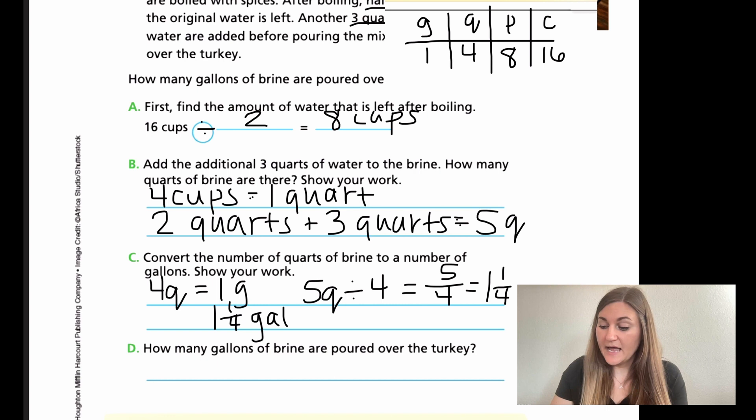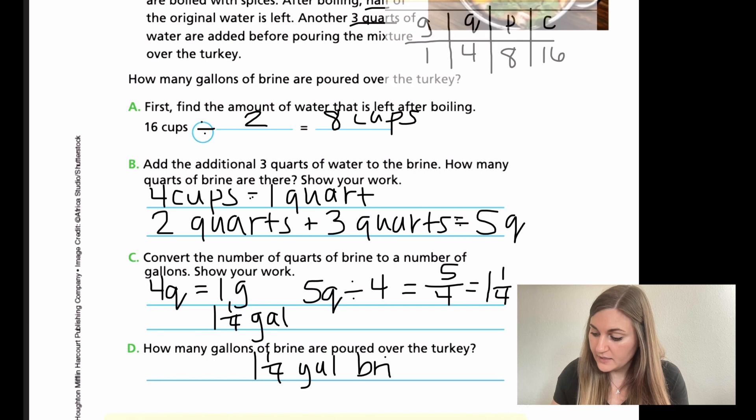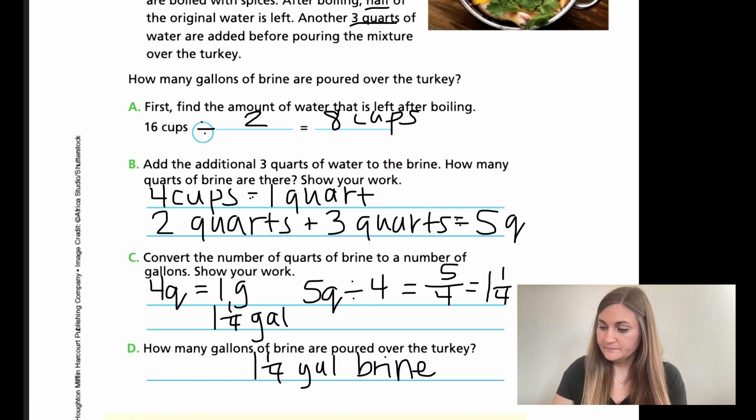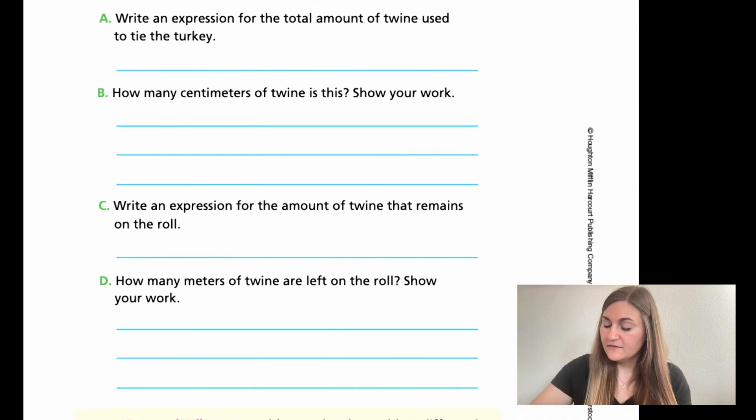D, how many gallons of brine are poured over the turkey? Now we're just writing it with our units. So we are going to have one and one fourth gallons of brine. Perfect.